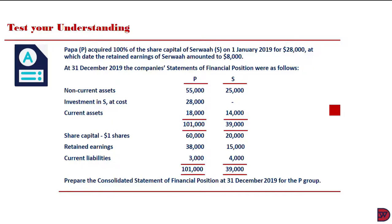At 31 December 2019, the companies' statements of financial position were as follows. We have non-current assets for both, the investment in Selwa at cost, and current assets for both, giving us the total for the asset column. We then have share capital, retained earnings, and current liabilities. We are required to prepare the consolidated statement of financial position as at 31 December 2019 for the P Group.